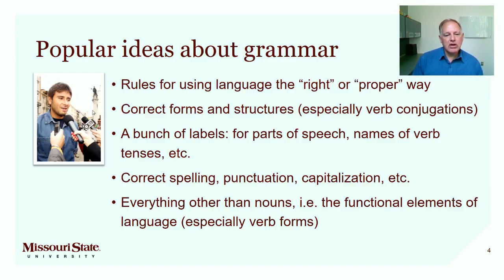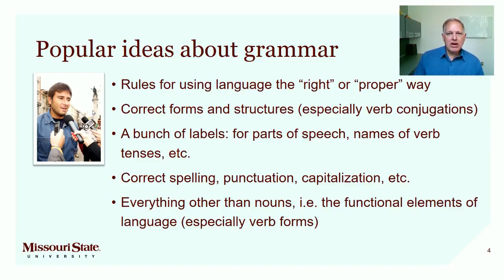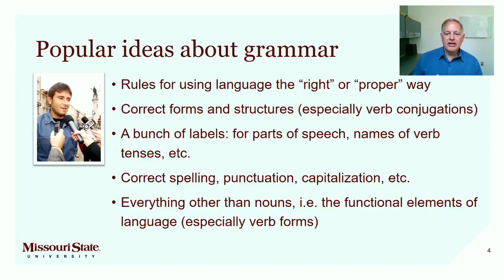Some people might also think — if they've been through a composition class — oh, you have to spell correctly, it's about punctuation, it's about capitalization. We're going to talk a little bit later in this video about how those things are not really grammar. Those are mechanics of writing: spelling, punctuation, capitalization, the use of accents. And then other folks think grammar is anything other than those words with primary semantic value — like nouns, adjectives, and adverbs — so the more functional elements of language, particularly things like verb forms, conjunctions, prepositions, pronouns, etc.